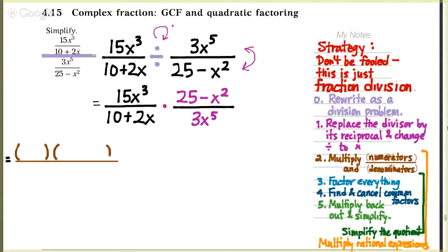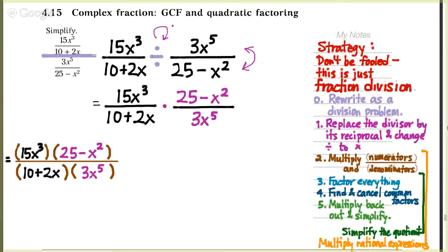We just multiply directly across the numerators — so our new numerator is 15x cubed times 25 minus x squared. Our new denominator is 10 plus 2x times 3x to the fifth. Now we have a single rational expression that it's our job to simplify.